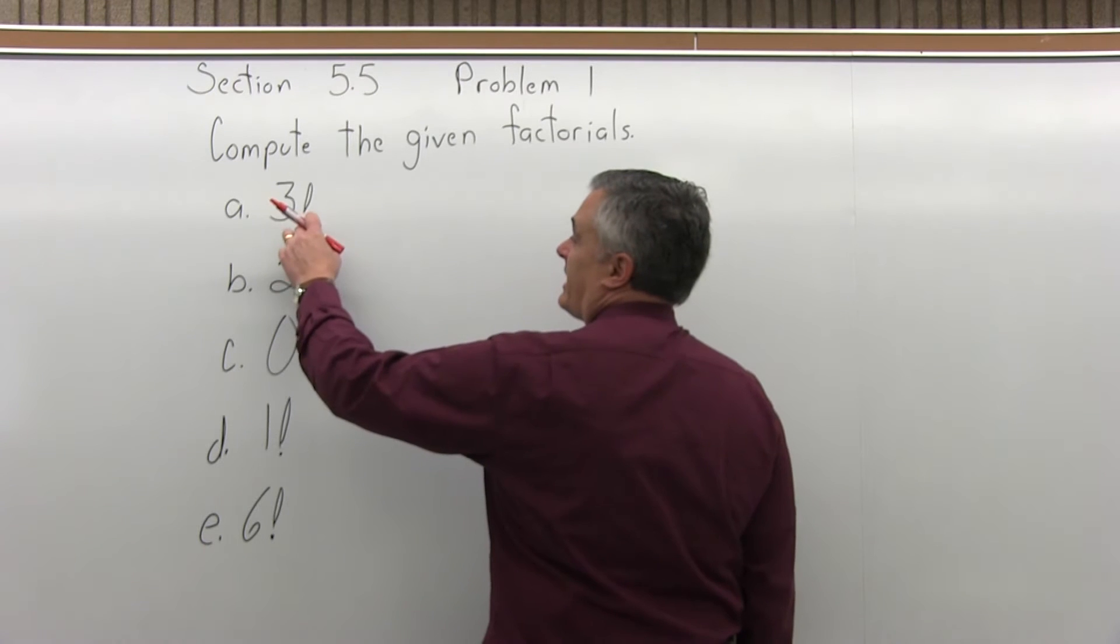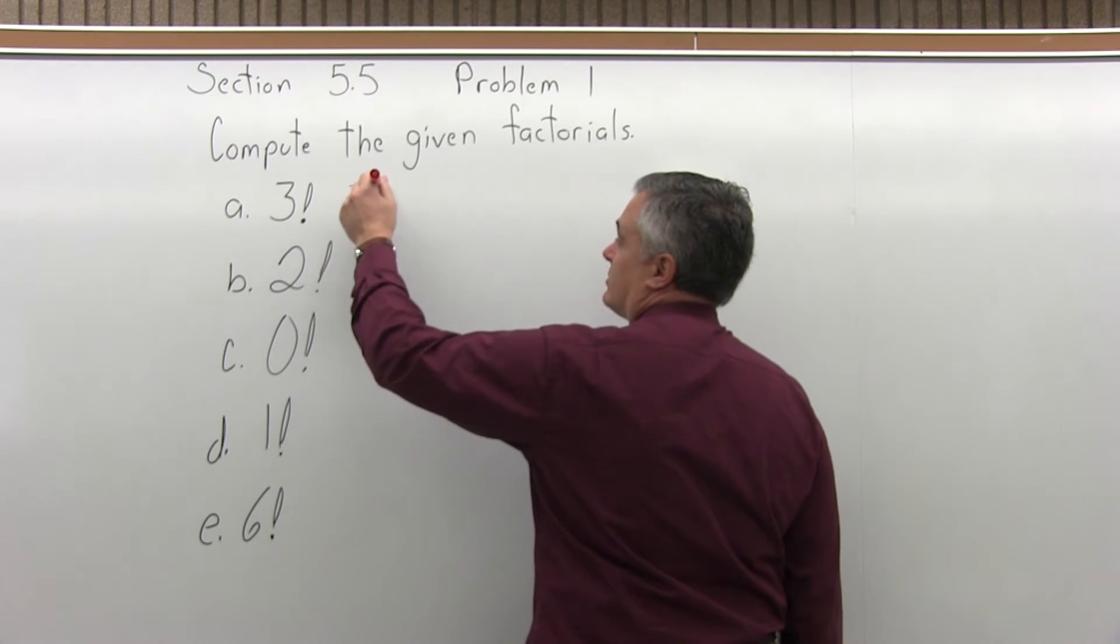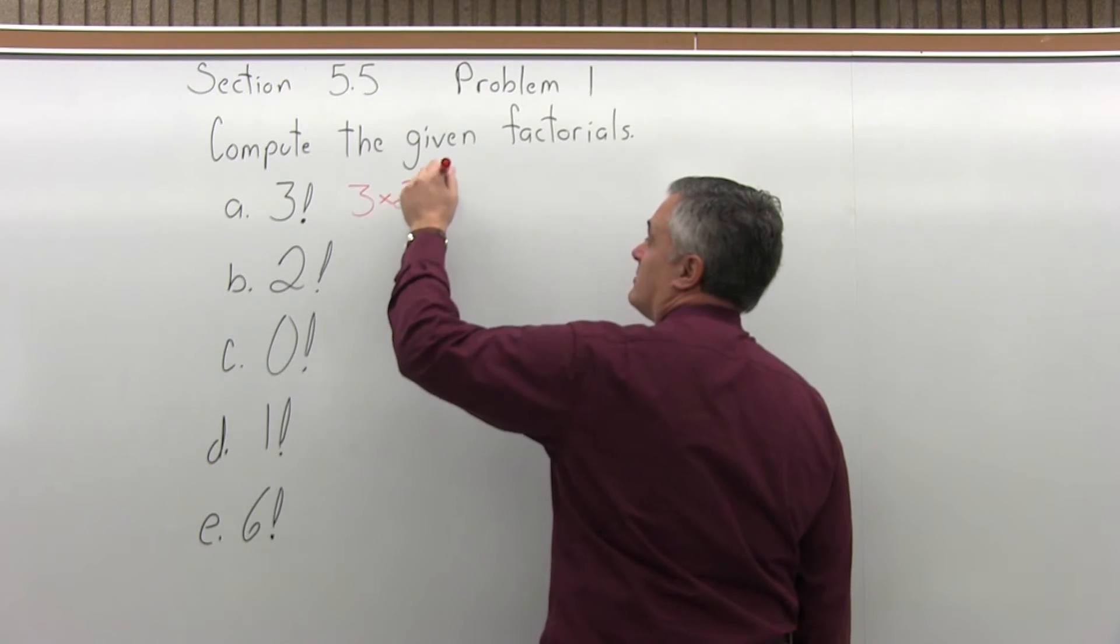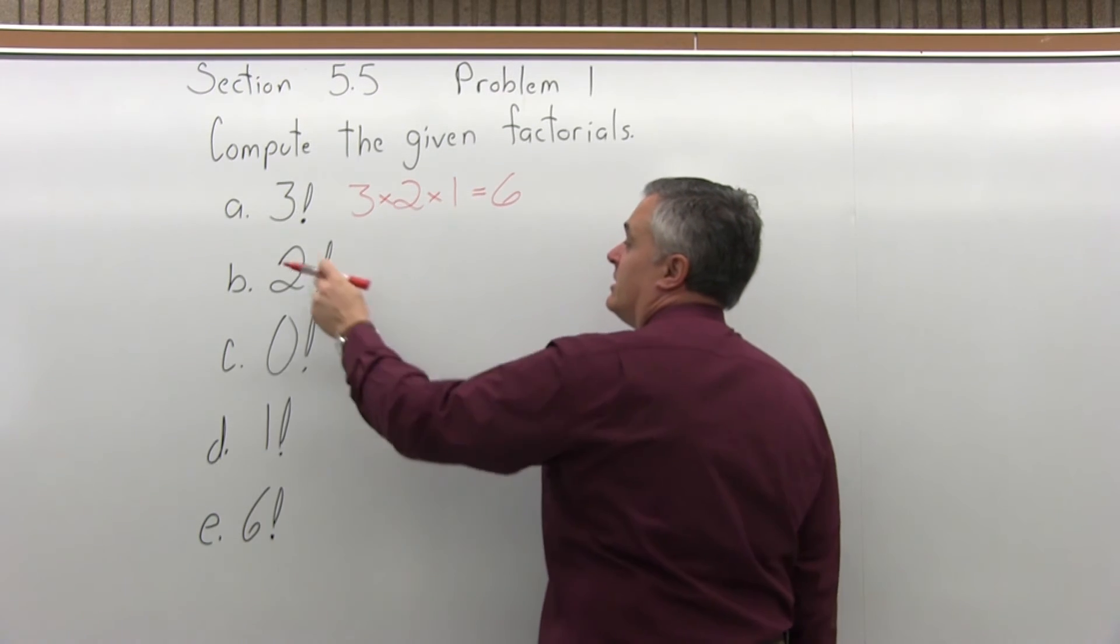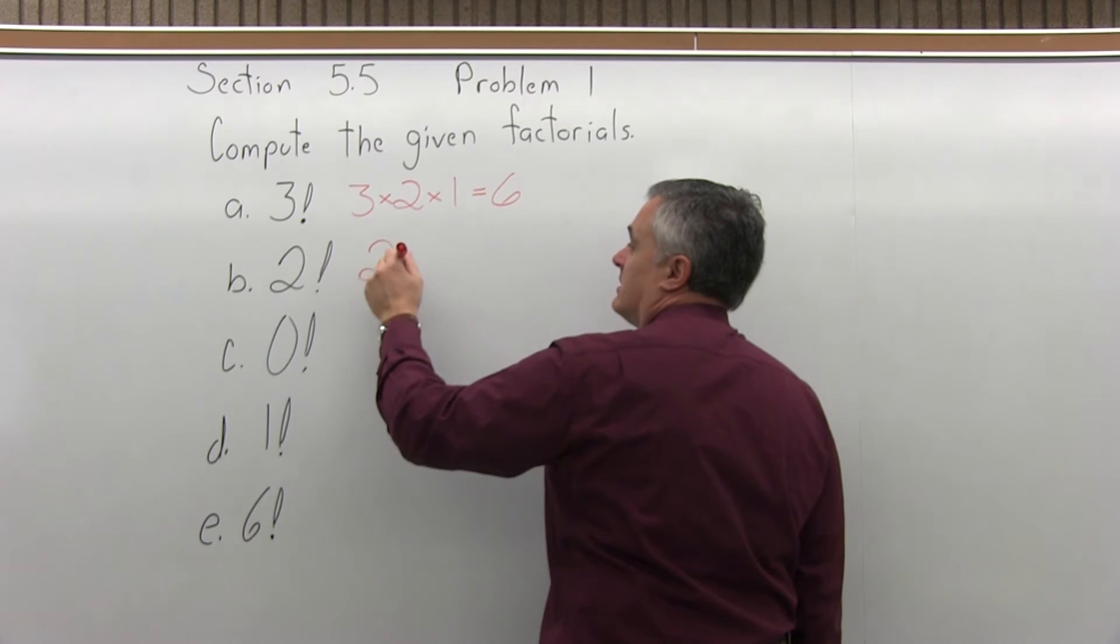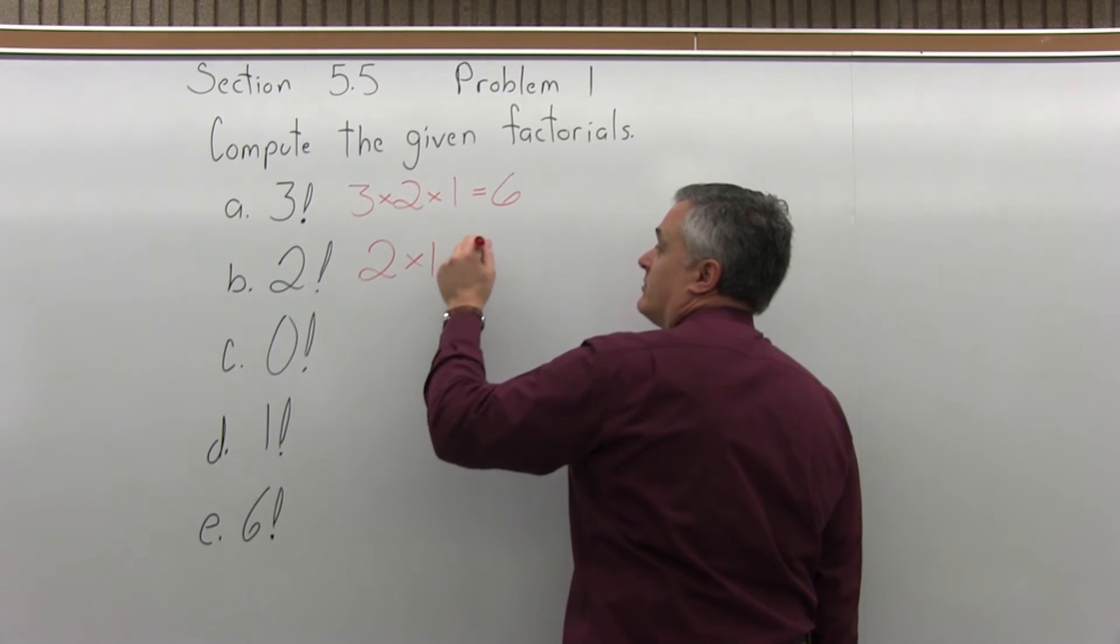So the first one, 3 factorial, so that is 3 times 2 times 1, and if you multiply that out, it gives you a result of 6. 2 factorial would be 2 times 1, which is just 2.